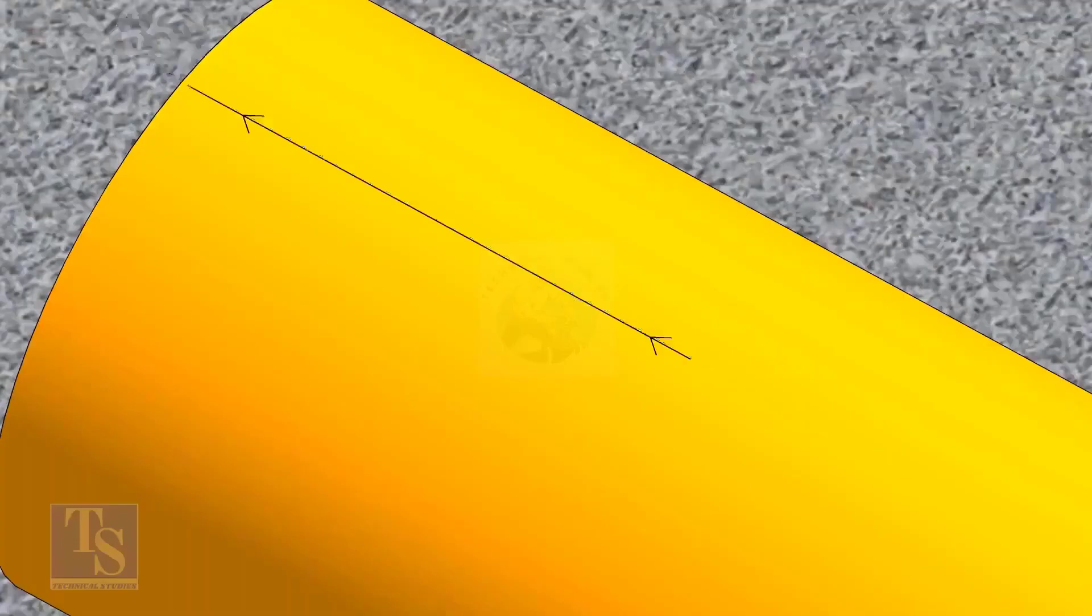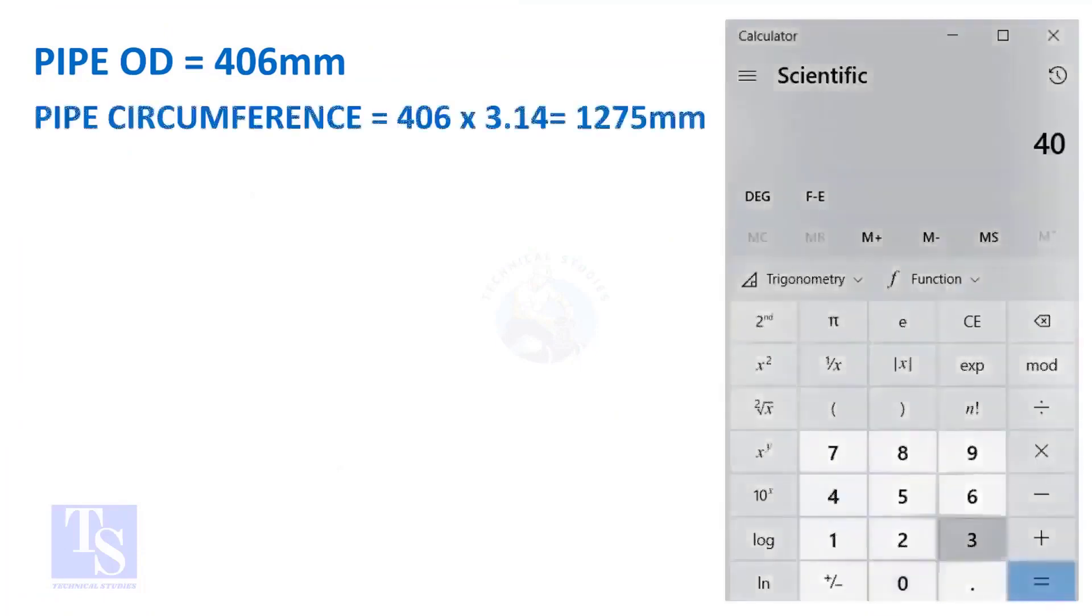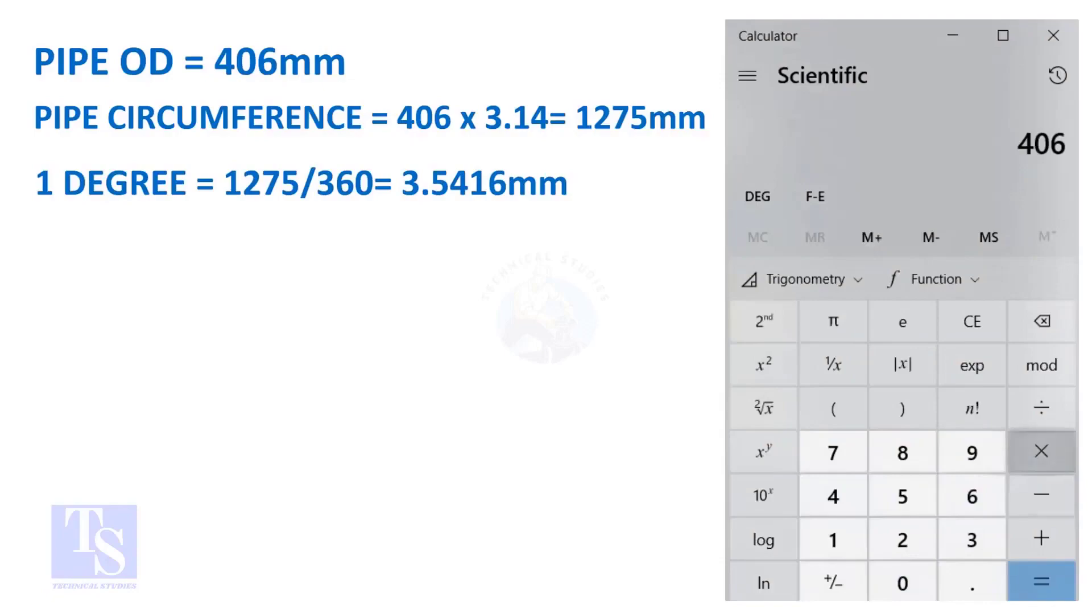Let us calculate the circumferential distance or arc length for 25 degrees. Multiply the OD by 3.14. You will get the circumference of the pipe. Divide the circumference by 360, you will get the arc length of 1 degree.